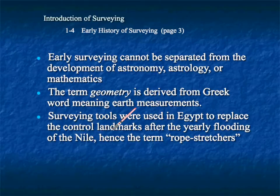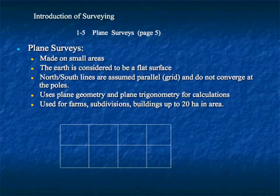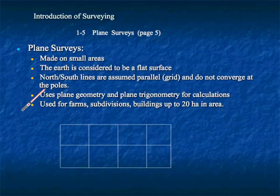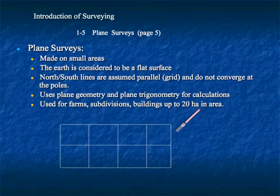Geometry is derived from the Greek word meaning earth measurements — that's important to know. The types of surveys: plane surveys are made on small areas where we can assume the earth is flat. This is done for small areas like farms, subdivisions, and buildings — areas up to 20 hectares.